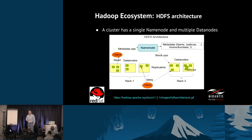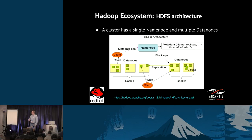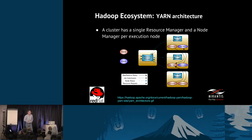HDFS underpins a lot of things — there are different processing frameworks that rely on it. HDFS is as much an API as it is an implementation, so there are things like GlusterFS from Red Hat and MapR's own file system implementation. There are a lot of possibilities. Looking at the YARN architecture: there is a single resource manager, analogous to what we saw with HDFS, that talks to node managers on each execution node.